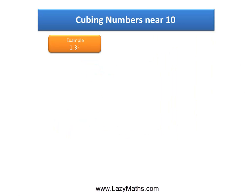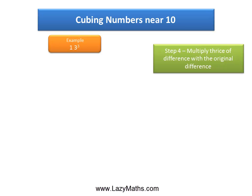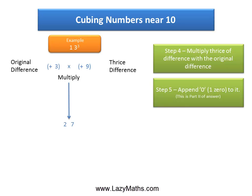The next step gives you part 2 of the answer. Step 4 is to multiply thrice the difference of the number to the original difference. The original difference was positive 3, thrice that is 3 times positive 3, which gives you positive 9. Now multiply these two differences: positive 3 times positive 9 gives you positive 27. Then append a zero, or multiply 27 with 10, and you get 270. This becomes part 2 of the answer.